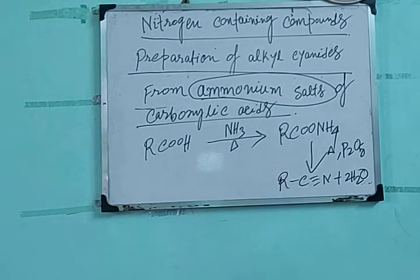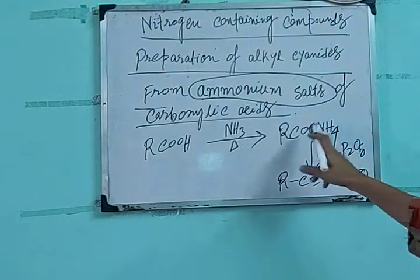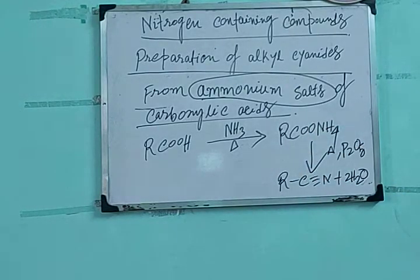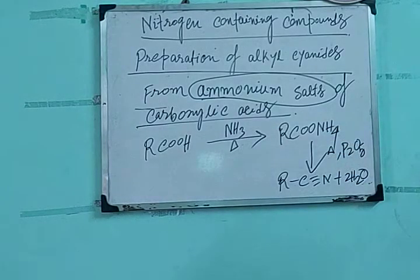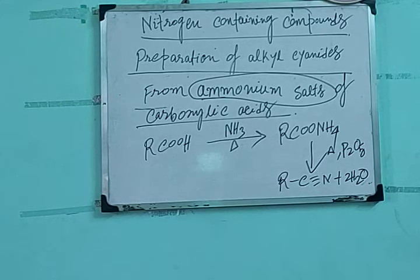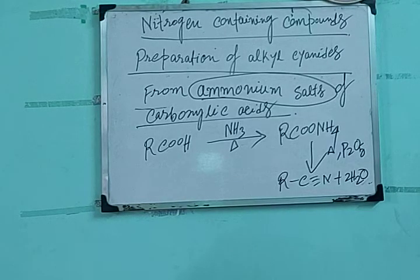So we can prepare the ammonium salt from the corresponding carboxylic acid by heating with ammonia. When the corresponding ammonium salt is heated in presence of a good dehydrating agent like phosphorus pentoxide, two water molecules are eliminated and you get the corresponding alkyl cyanide. These are three preparatory methods for alkyl cyanides; remaining methods will be discussed in the next class.